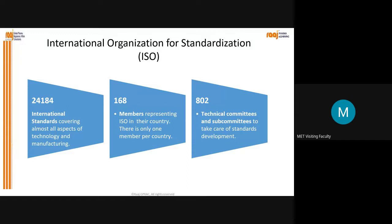There are 168 members representing ISO in their country - there is only one member per country, similar to how WHO has 193 nations. ISO is an international standard with 168 members. There are also 802 technical committees and subcommittees to take care of standards development, and this number keeps increasing as new standards are developed.